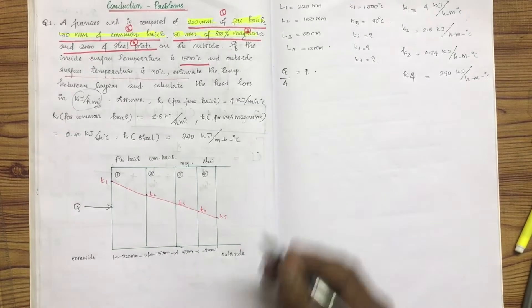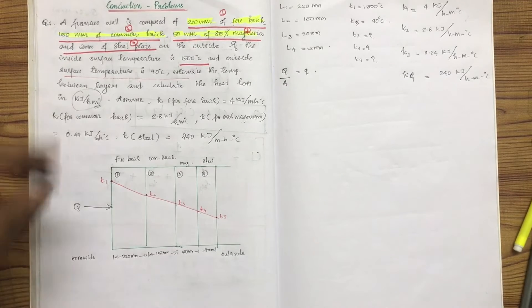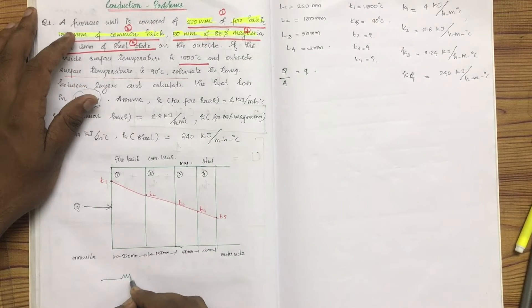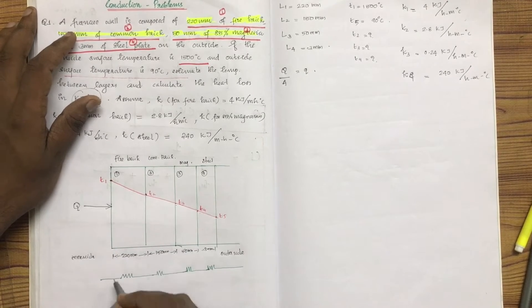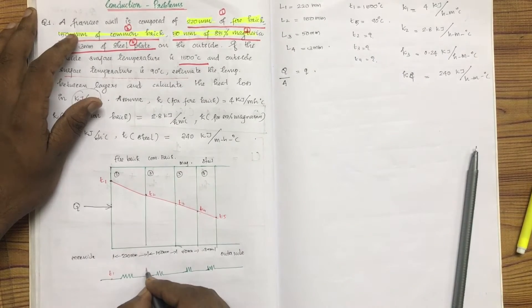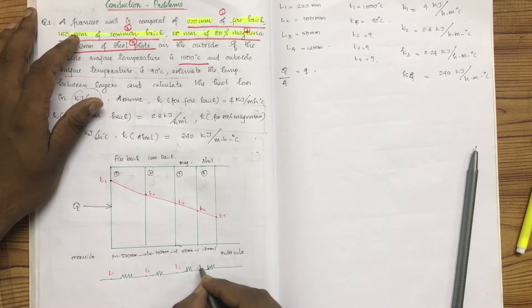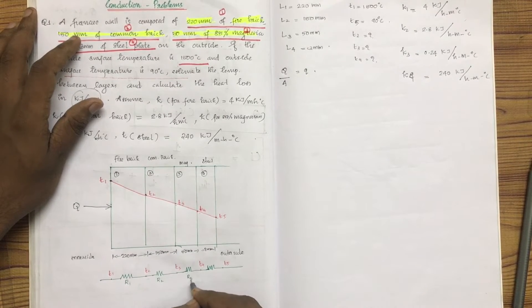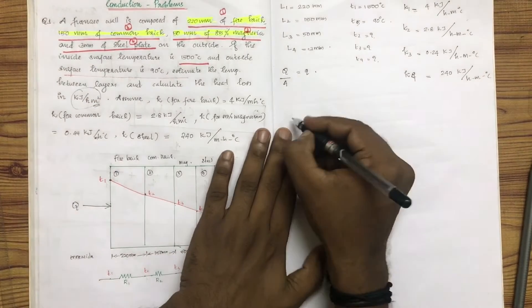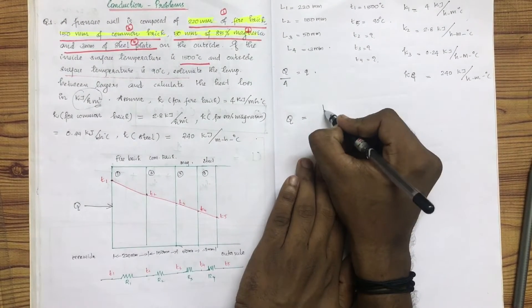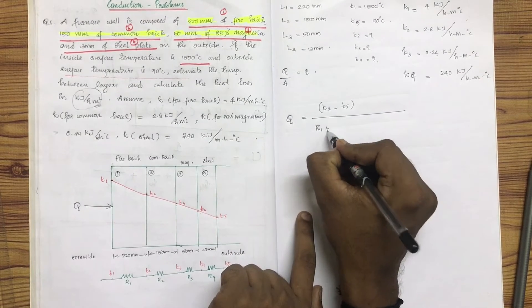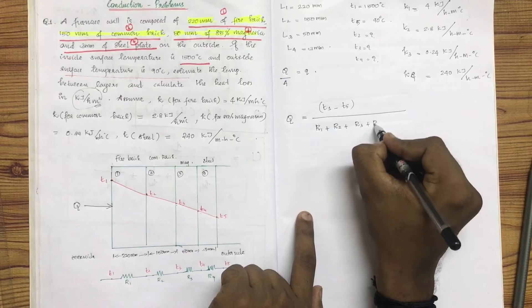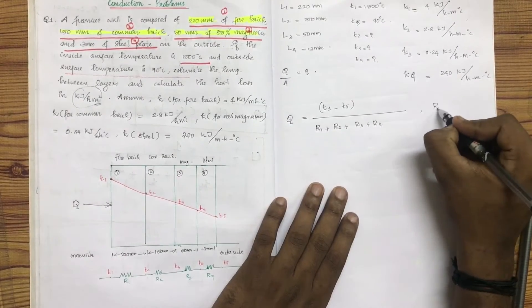Using the resistance mode, we don't have thermal contact resistance. There is resistance R1, R2, R3, and R4. Q is equal to T1 minus T5 divided by R1 plus R2 plus R3 plus R4.